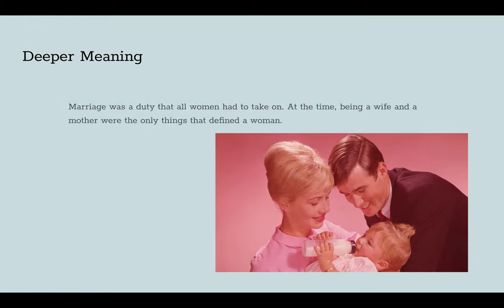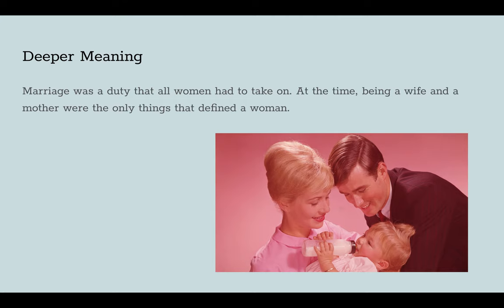The deeper meaning: marriage at the time was a duty that all women had to take on. Being a wife and a mother were the only things that defined a woman. A woman without a male companion was assumed to be weak and frail, as seen in the short story, where Mrs. Macpherson is assumed to be fragile because of the death of her husband. Therefore, the siblings feel obliged to take care of her, assuming that without someone to lean on, a woman is incapable of being independent.